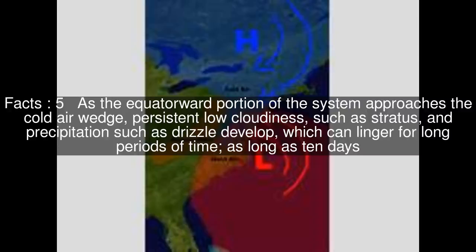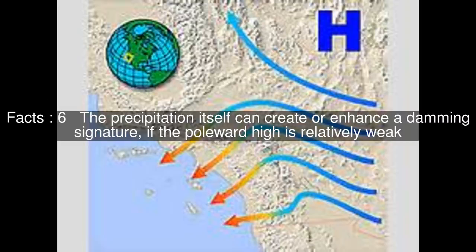As the equatorward portion of the system approaches the cold air wedge, persistent low cloudiness, such as stratus, and precipitation such as drizzle develop, which can linger for long periods of time, as long as 10 days. The precipitation itself can create or enhance a damming signature if the poleward high is relatively weak. If such events accelerate through mountain passes, dangerously accelerated mountain gap winds can result, such as the Tehuantepec and Santa Ana winds.